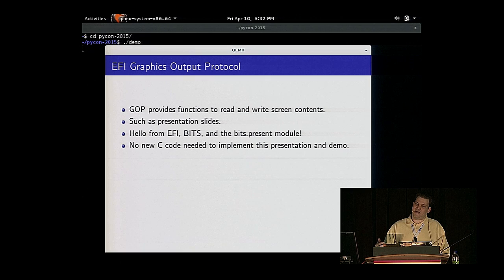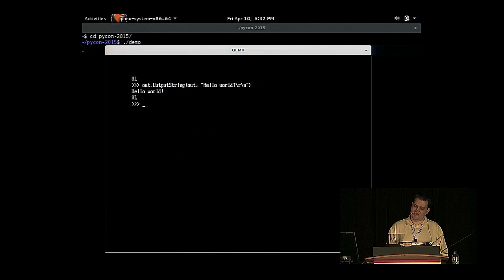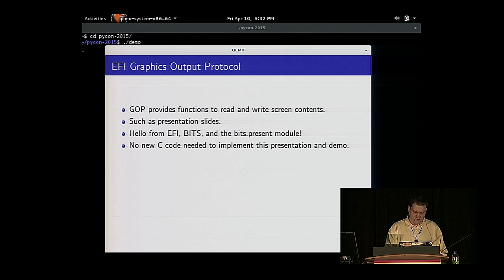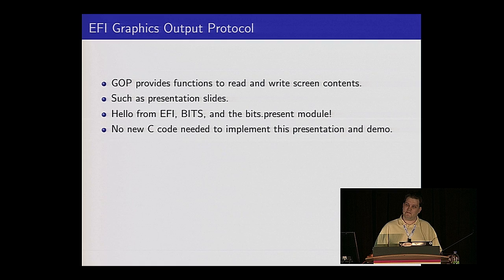Every time it looked like I was doing an alt-tab back and forth between a Python window and this presentation, I was hitting Escape to get out of my presentation and a hotkey that binds into our readline layer to jump back to the presentation. It's all running in the same application without an operating system, entirely using EFI graphics output protocol. No new C code — not a single line.